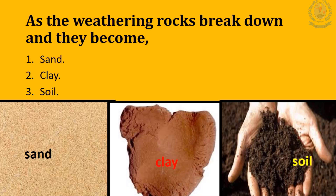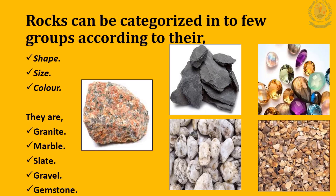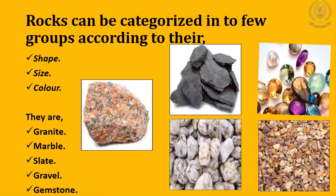In these pictures you can see sand, clay, and soil separately. According to their shape, size, and color, we can categorize rocks into a few groups. They are: granite, marble, slate, gravel, and gemstones.